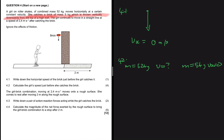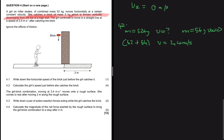After catching the brick, the girl continues to move in a straight line at a speed of 2.4 meters per second. So the girl of mass 52 kg plus the brick of 5 kg move together at a velocity of 2.4 meters per second. To solve this, we're going to use the conservation of linear momentum — the sum of momentum before equals the sum of momentum after.